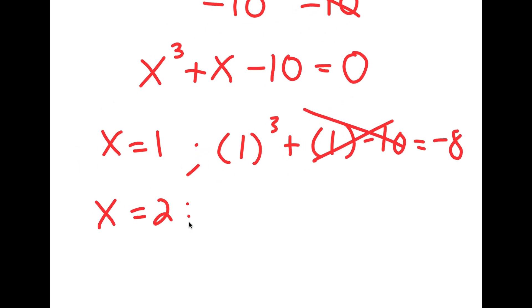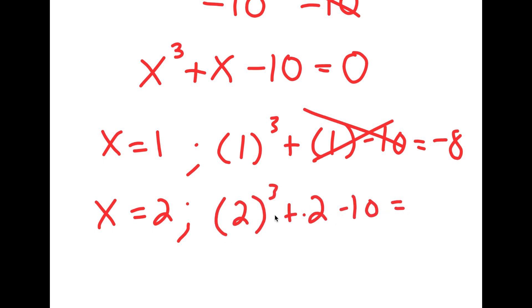Now let's try x equals 2. When x equals 2, I get 2 to the power of 3 plus 2 minus 10. 2 to the power of 3 is 8. 8 plus 2 is 10. 10 minus 10 is 0. So this works.